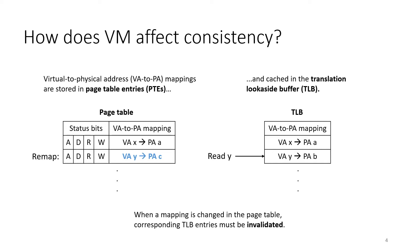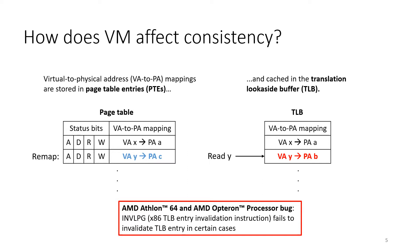The mappings themselves can be modified by the system. When this occurs, any existing TLB entries for this mapping must be invalidated such that a memory operation does not access the stale mapping. Subsequent memory accesses following the TLB entry invalidation must then load the mapping from the page table to bring it back to the TLB. However, a bug in AMD Athlon 64 and AMD Opteron processors caused TLB entry invalidations to fail in certain cases. This bug could lead to stale mapping accesses in the TLB, resulting in memory accesses to unintended locations during a program execution, which could cause incorrect and unexpected program behaviors.